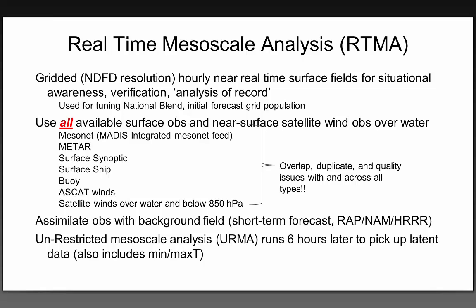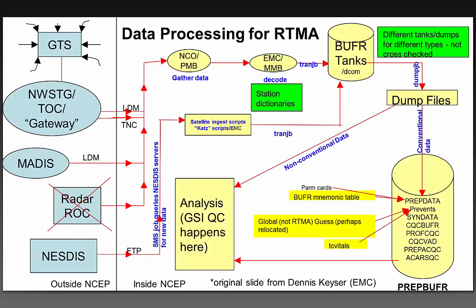There is also the Unrestricted Mesoscale Analysis, URMA, which runs six hours later to deal with latent data. Observations come into NCO where they're translated into BUFR. One potential holdup is that many native data formats don't contain geolocation information — that has to come from hard-coded dictionaries which must be maintained. They go into tanks and dumps for different types, with some duplication to deal with. They're then sent into dump files and prep-BUFR files — the operational file used in the system — where in theory most quality control should take place, though in reality most happens within the GSI.